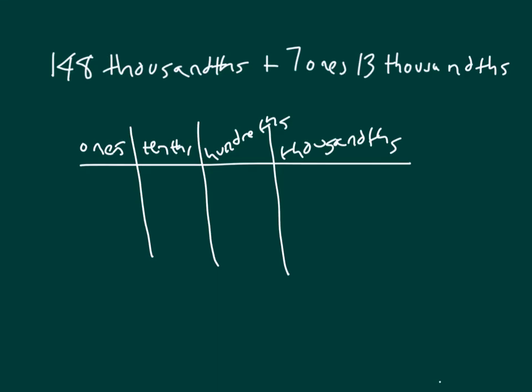Here's another problem. 148 thousandths. 1, 4, 8. added together with seven ones along with 13 thousandths. And adding these together, there is a regroup. Regroup is in the thousandths place. We bundle 10 of those.